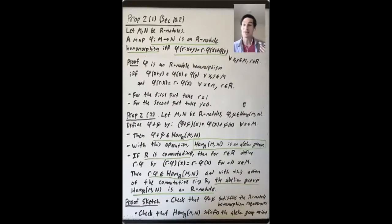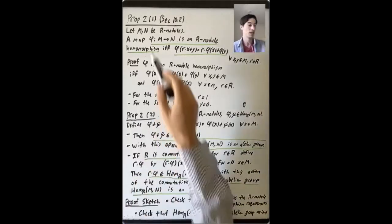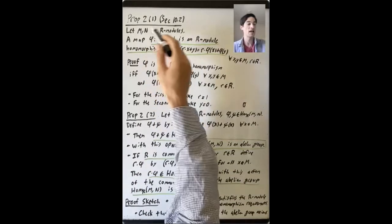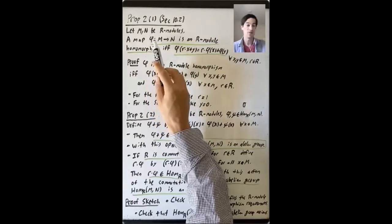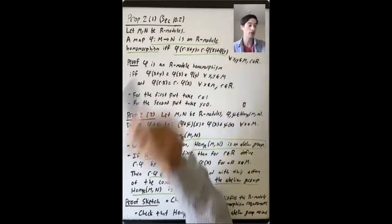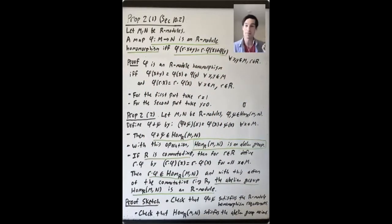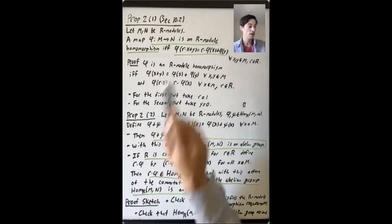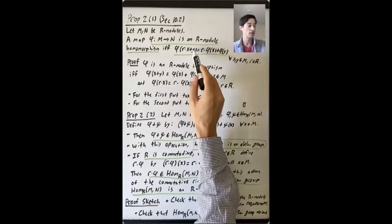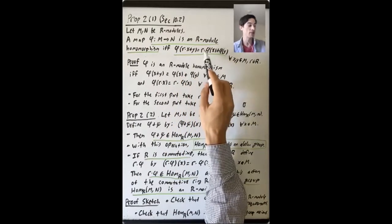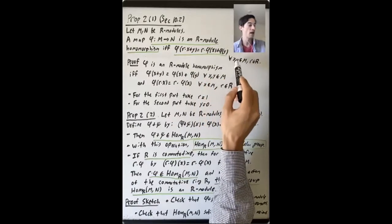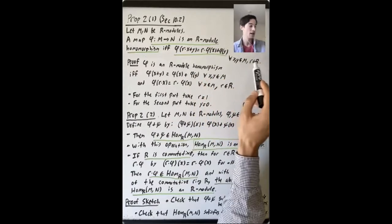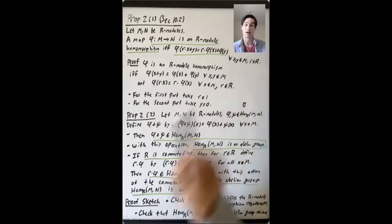Let's begin with this criterion to tell when a map is an R-module homomorphism. Let M and N be R-modules. A map phi from M to N is an R-module homomorphism if and only if phi of r·x plus y equals r·phi(x) plus phi(y), for all x and y in the module M and r in the ring R.